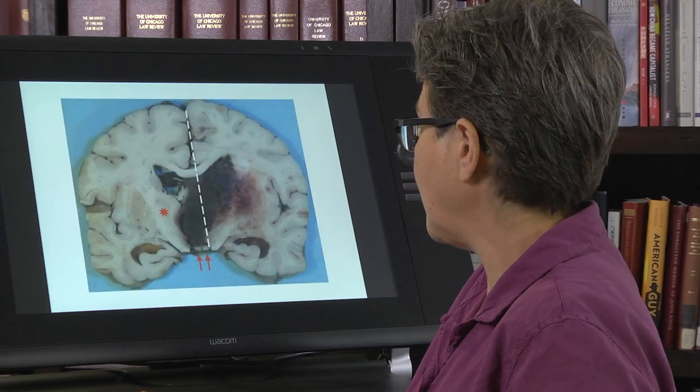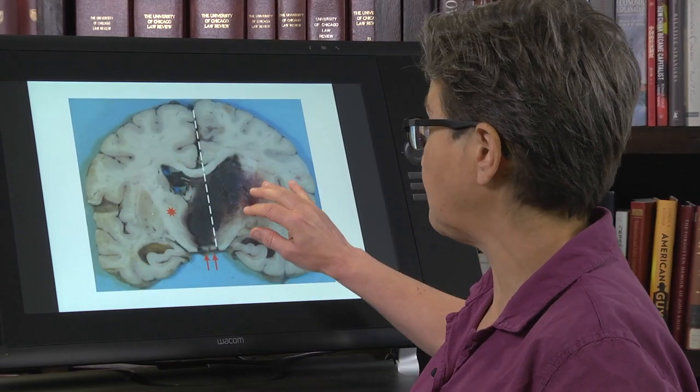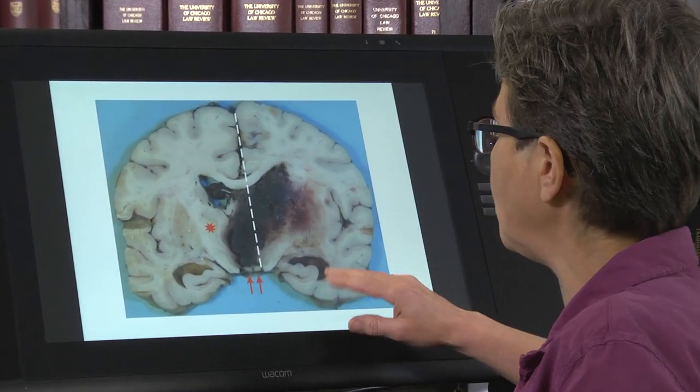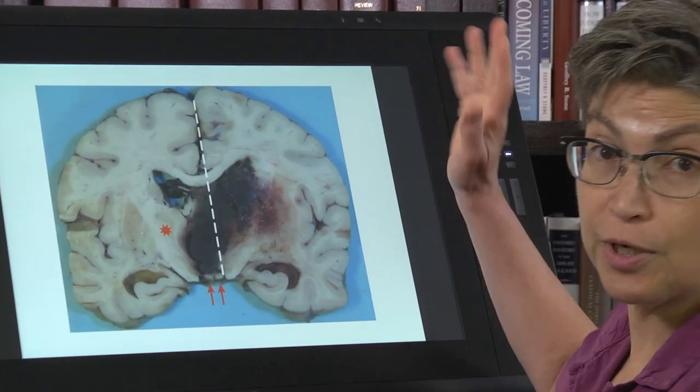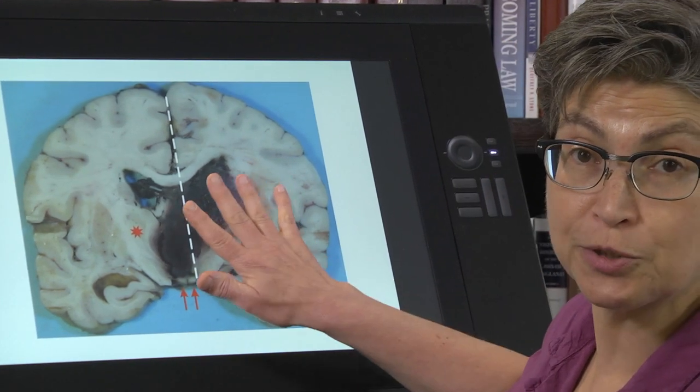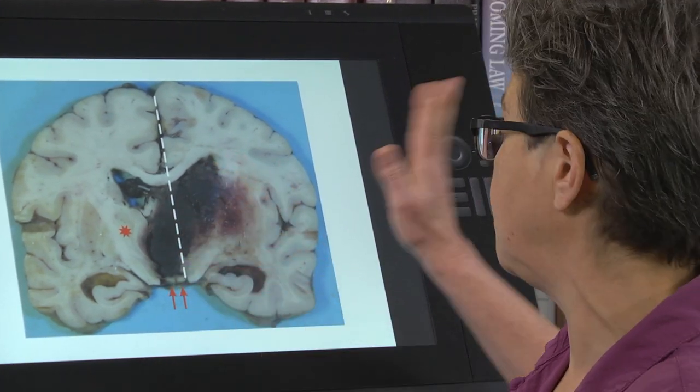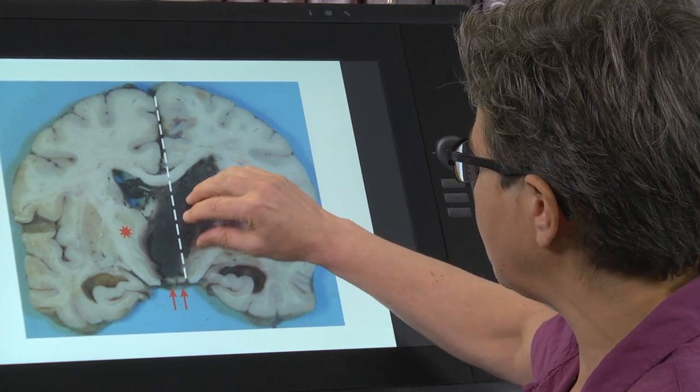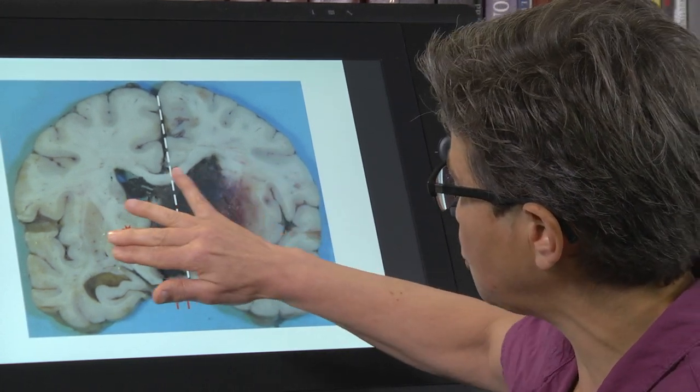When that occurs, there's something called mass effect. So here's a hemorrhagic stroke, and this is a pretty mild one—there are much more extreme versions. What you can see is that the pressure buildup has pushed things off to the side. This is called mass effect.